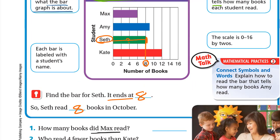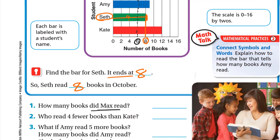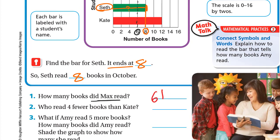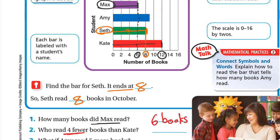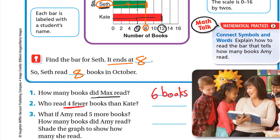How many books did Max read? Max's bar ends at 6, so Max read 6 books. Who read 4 fewer books than Kate? Kate read 12 books. Four fewer than 12 means 12 minus 4, which is 8. Who read 8 books? That's Seth, so Seth read 4 fewer books than Kate.